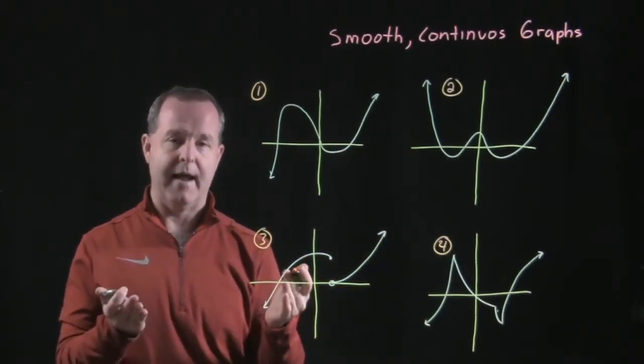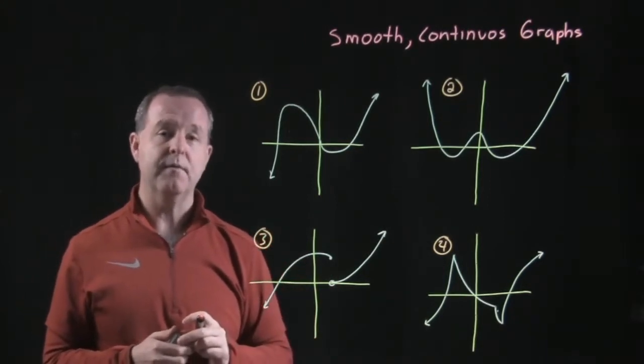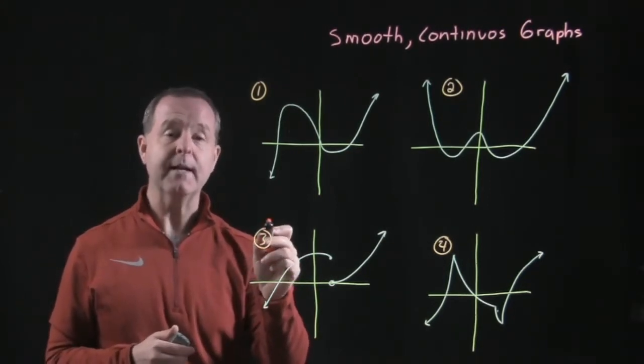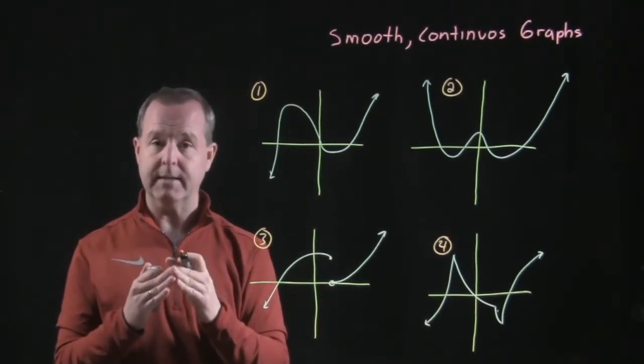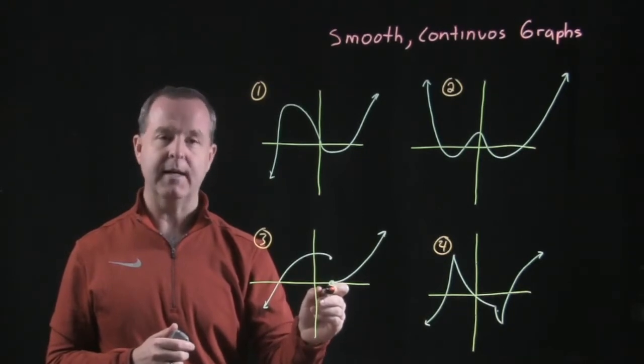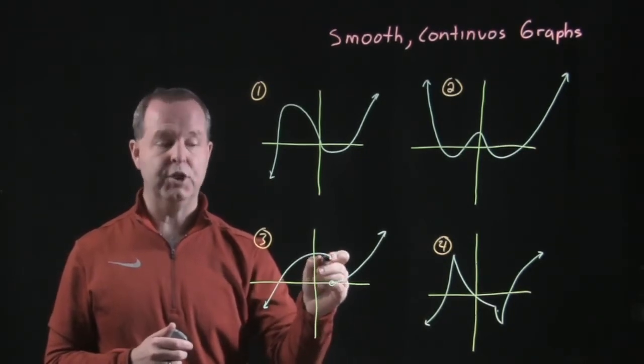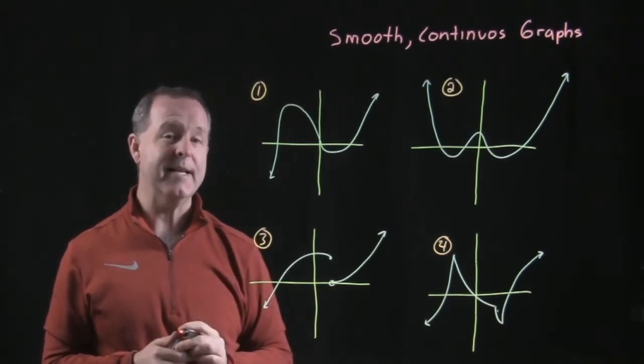And you can contrast that with three and four. Three and four are neither smooth nor continuous. Well, three, it is smooth, has a nice flow, there's no jagged points, but there's a gap. Whatever this x value here, you notice that the graph jumps and begins again. So three is not a continuous graph.